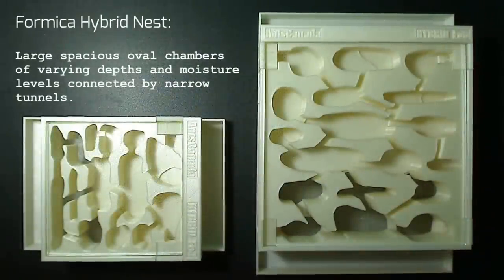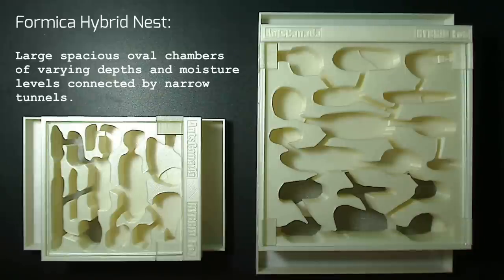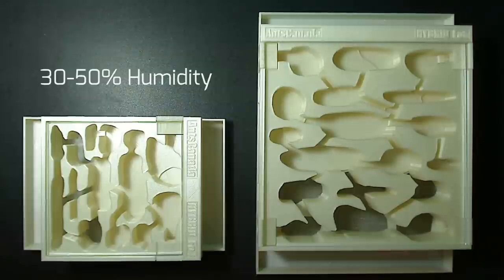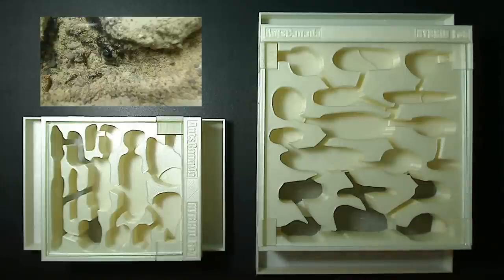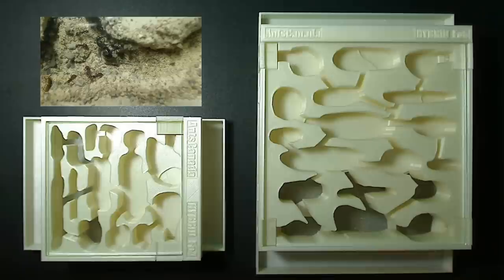The Formica hybrid nest. Large, spacious, oval chambers of varying depths and moisture levels connected by narrow tunnels. It offers 30-50% humidity, and is suitable for most Formica and all common ant species, except for some larger ants like Camponotus or Pogonomyrmex. It may also not be suitable for moisture-loving ants like Myrmica.